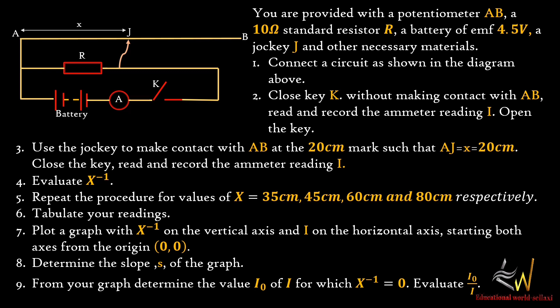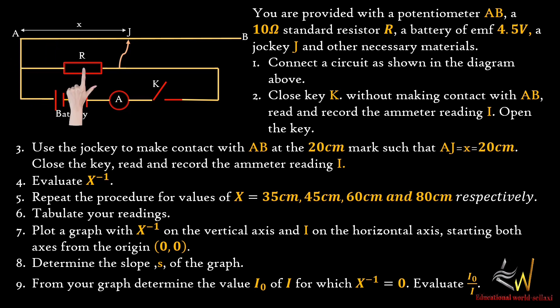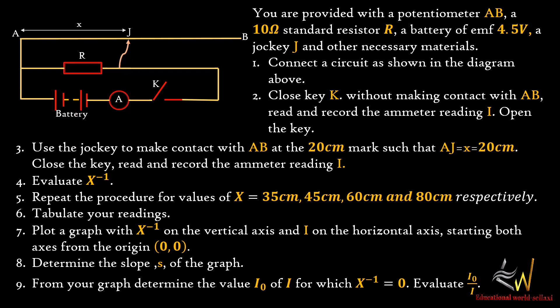You are provided with a potentiometer AB, a 10 ohm standard resistor R, a battery of EMF 4.5 volts, a jockey J, and other necessary materials. Connect a circuit as shown in the diagram above. Close the key without making contact with AB, then read and record the ammeter reading I.